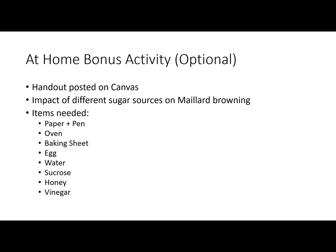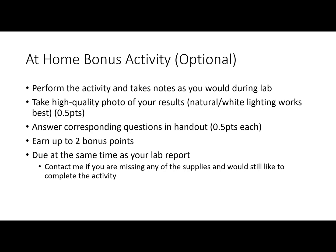We're providing an optional at-home bonus activity worth two additional lab points. Since we're all stuck at home, we're giving you a chance to do some hands-on food science in your kitchen using ingredients most people have at home. Essentially, you'll mimic the lab reaction using an egg and different sources and types of sugars to see how Maillard browning is influenced by those different sugar sources. A more detailed handout is available on Canvas — contact me if you have questions. It will be due at the same time as your lab report.